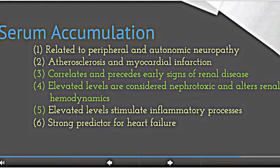Elevated serum accumulation of AGEs has been evidenced in peripheral and autonomic neuropathy, atherosclerosis and myocardial infarction, and precedes early signs of renal disease. It is also considered nephrotoxic, alters renal hemodynamics, and stimulates inflammatory processes, not to mention that it has been demonstrated to be a strong predictor for heart failure.